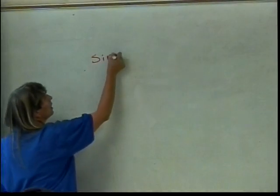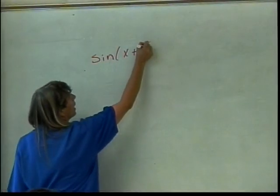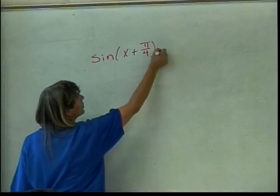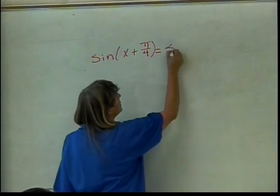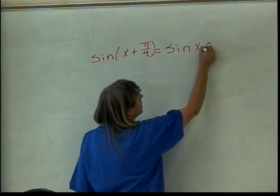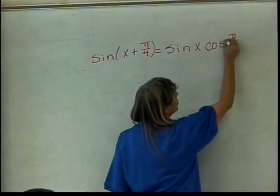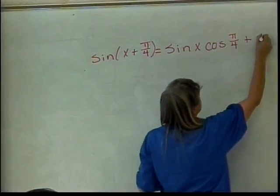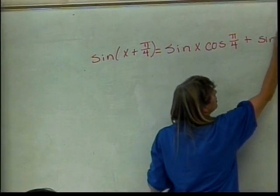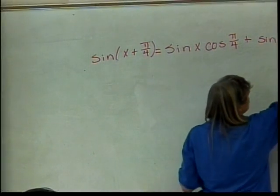So we have the sine of x plus pi over 4. This is equal to sine of x times the cosine of pi over 4, plus because it's plus here, sine of pi over 4 times cosine of x.